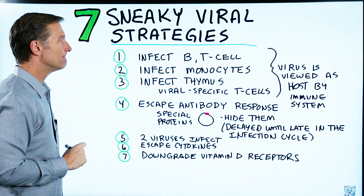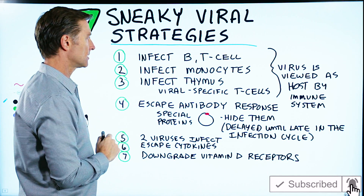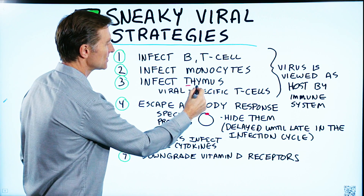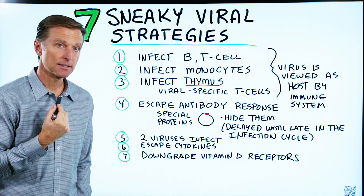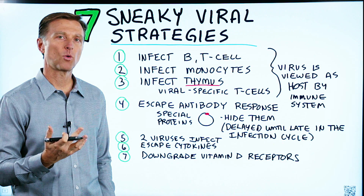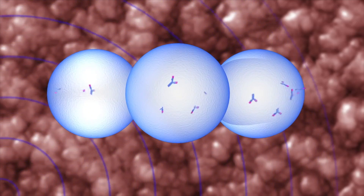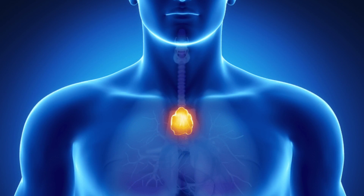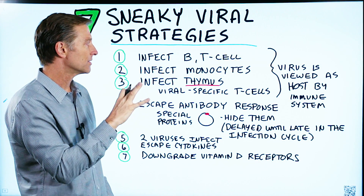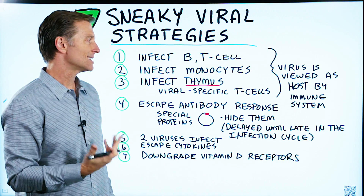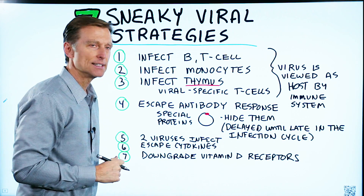Number one: viruses can infect your own immune cells — the B and T cells, the monocytes, and even your thymus and viral-specific T cells. The thymus is right above the heart and is a gland — it's like a training camp for your white blood cells, training them to defend against pathogens. These viruses can invade the thymus and other immune cells, become part of your cell, and be viewed as your own cell by your immune system — going underneath the radar without being detected.